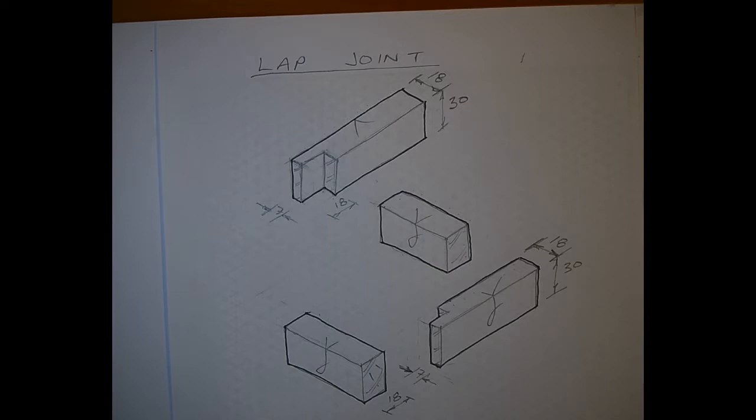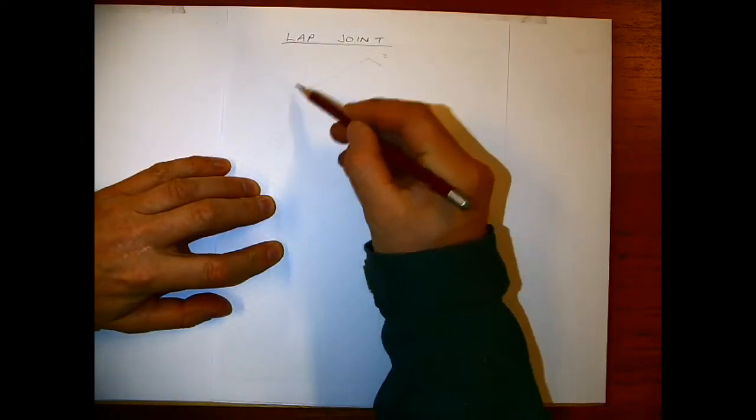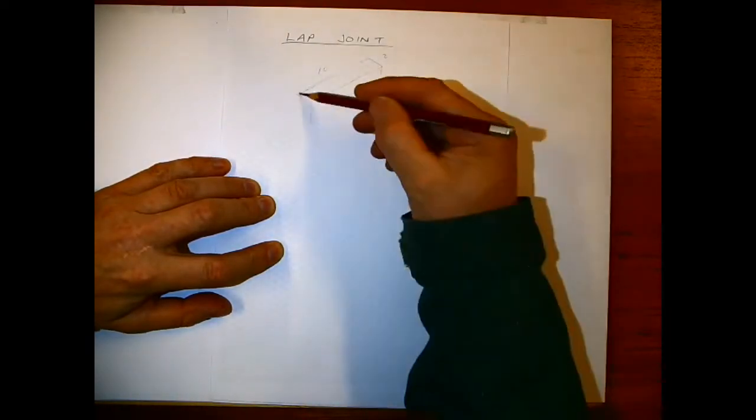In this video we're going to take a look at how to sketch a lap joint. Start off by looking at a picture of what we want to end up with and ask ourselves what information we want to convey. We'll start by drawing a rectangular block using the axis and isometric grid paper.